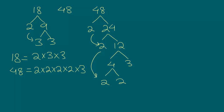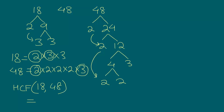Now we are trying to find out the highest common factor. We see that there is a 2 in 18 and a 2 in 48 — that is a common factor. And there is a 3 in 18 and a 3 in 48. For 18 there is only one 3 left, and for 48 there are no more 3's. So the HCF of 18 and 48 is equal to 2 times 3, which is 6.